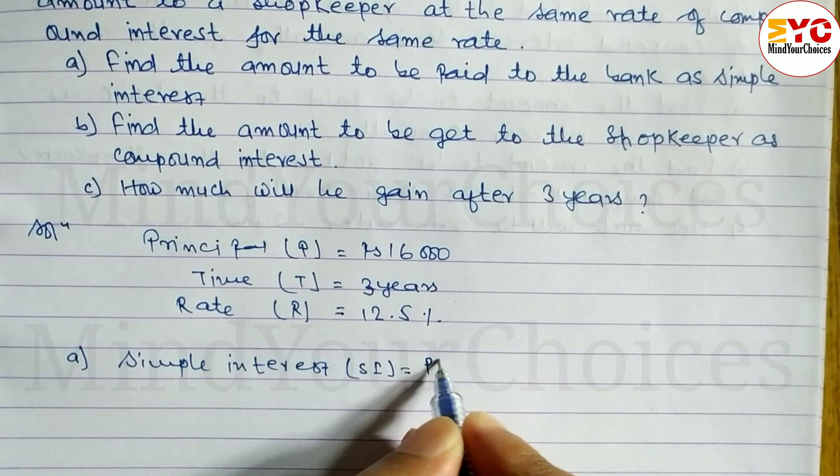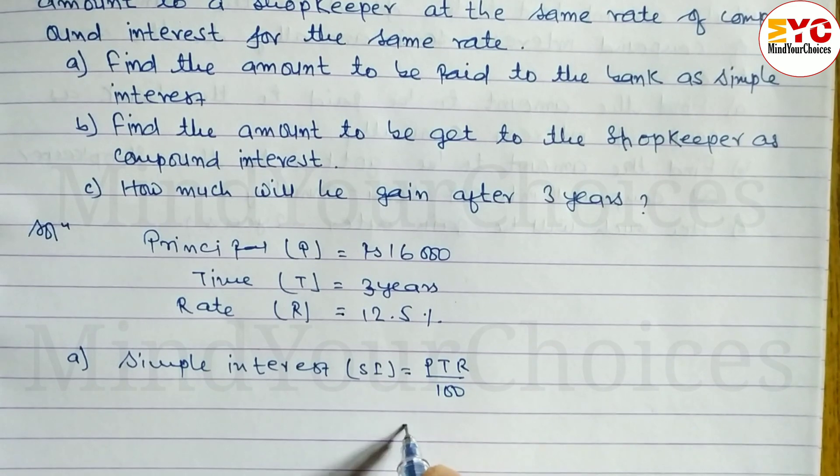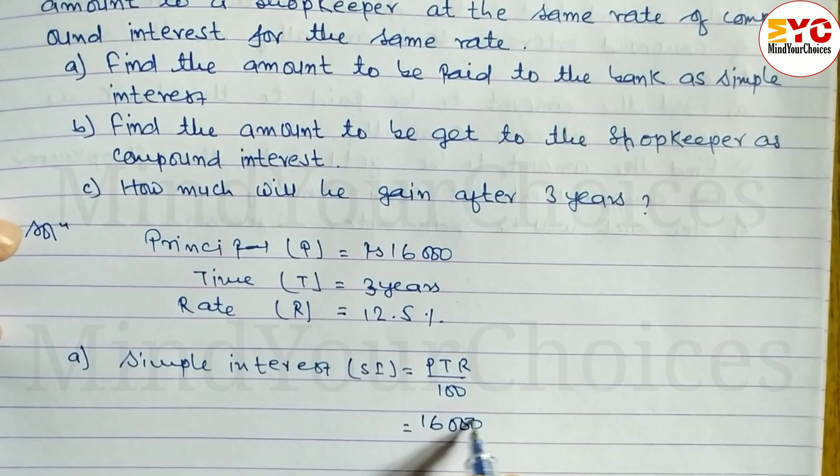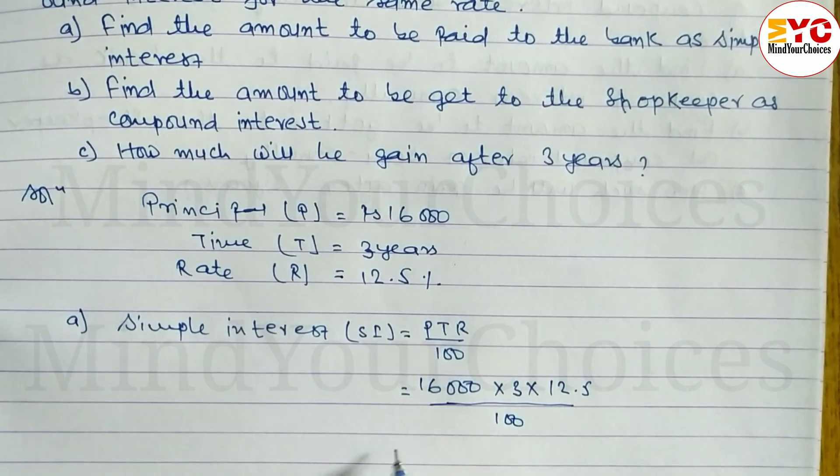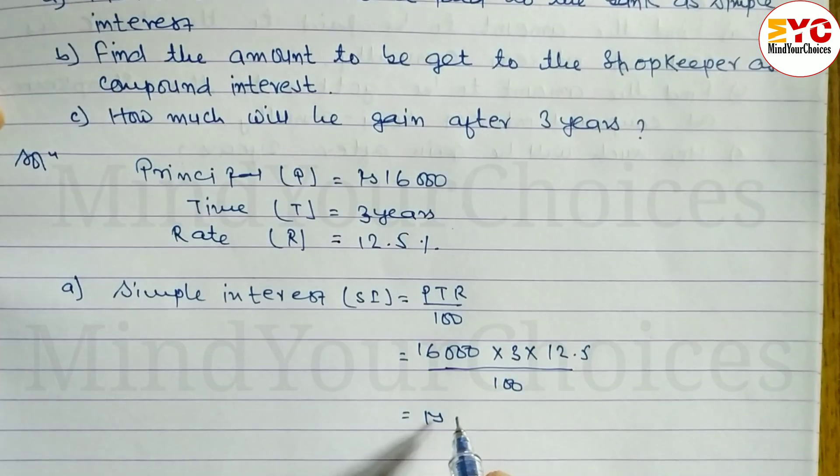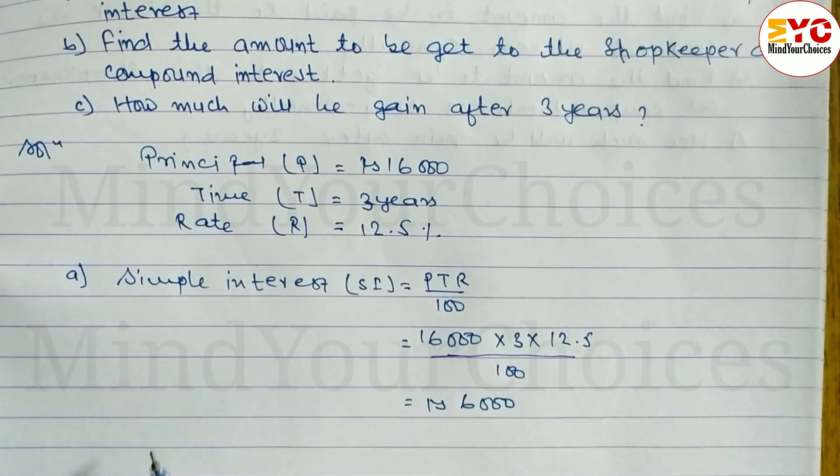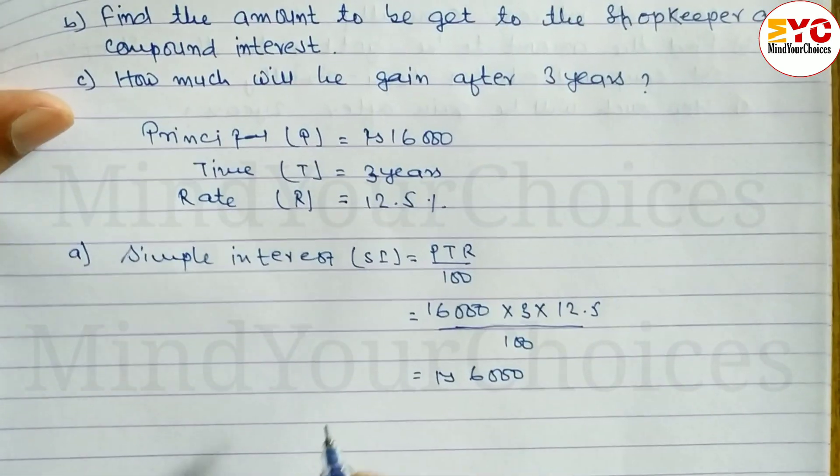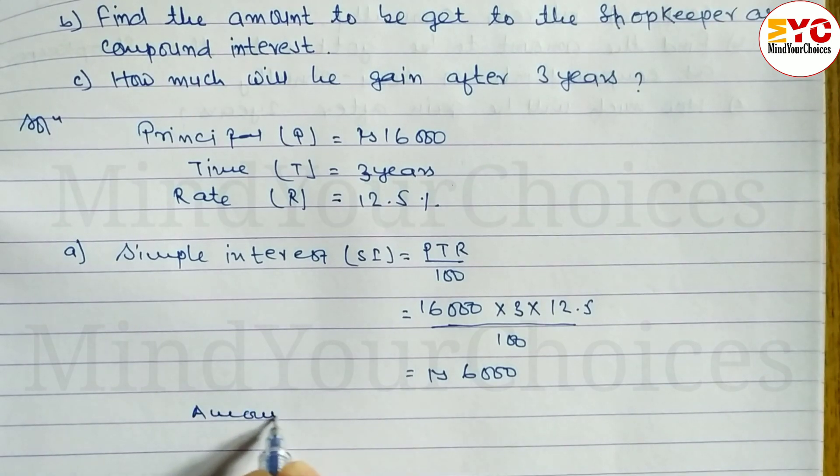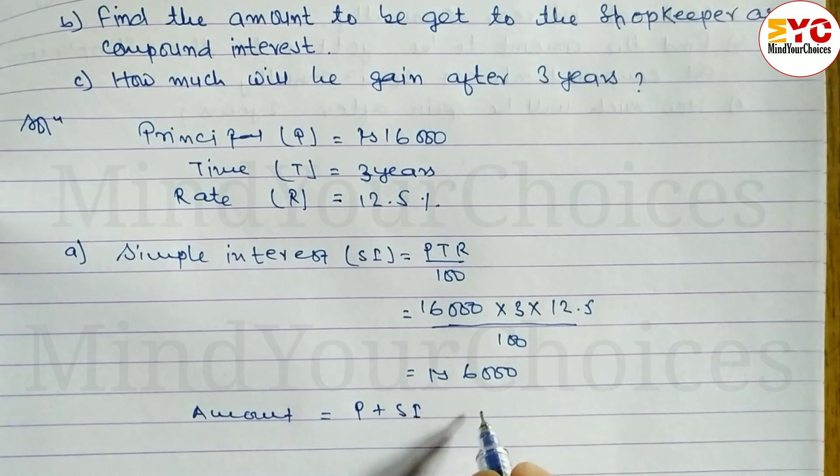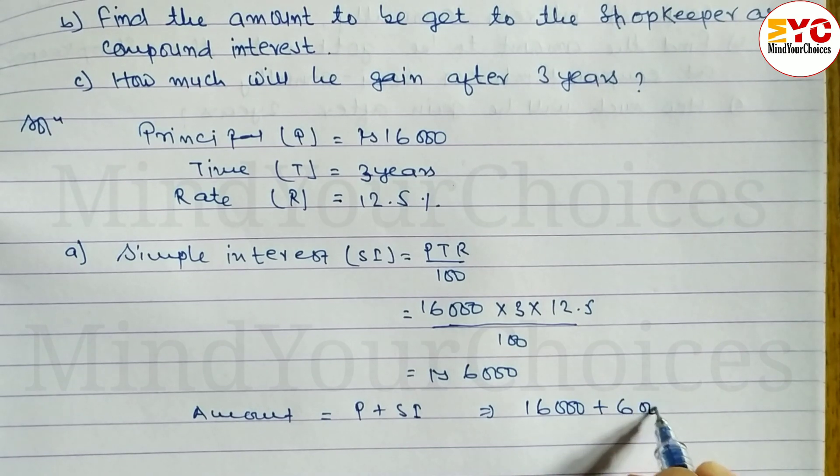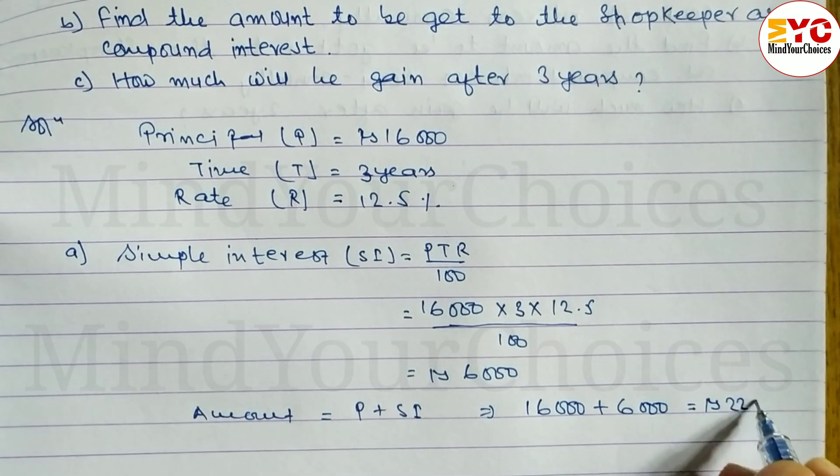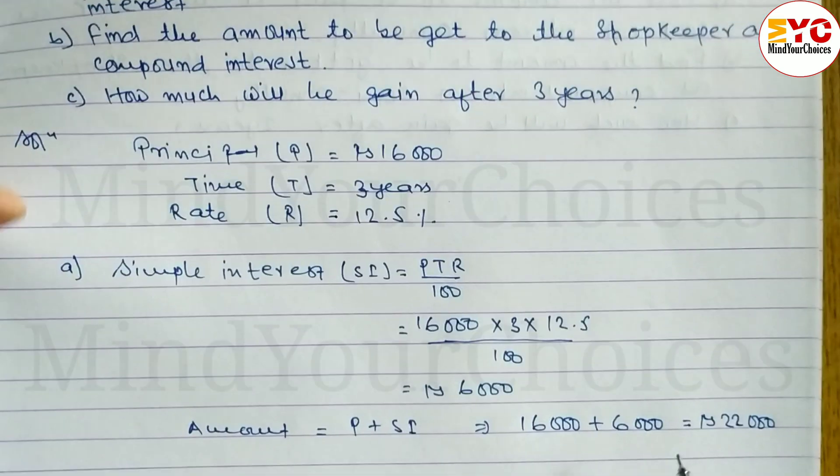SI = (16,000 × 3 × 12.5)/100 = Rs. 6,000. The total amount to be paid to the bank is Rs. 22,000 including simple interest.